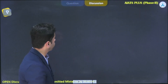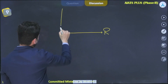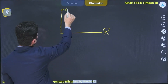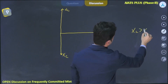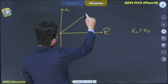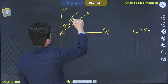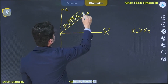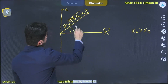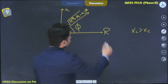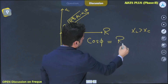We can use the same concept for the impedance triangle. If this is R, then this will be XL and this will be XC. Assuming XL is greater than XC, the net impedance Z = √(R² + (XL − XC)²), and this angle is φ. So cos φ, the power factor, equals R by Z.